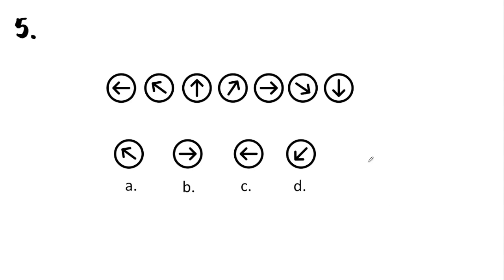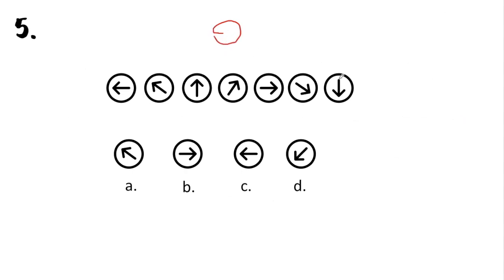We go to the last question. We are given different arrows pointing in different directions. Looking at the relationship of the arrows, the arrow is moving clockwise — gradually rotating clockwise, semi-quarterly. The last arrow is facing downwards, so the next arrow should be a semi-quarter clockwise from there. The correct answer is letter D.